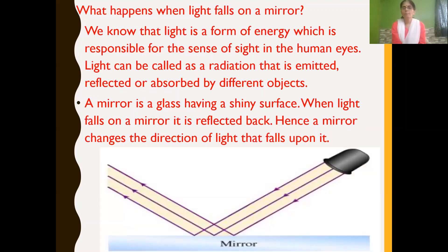When light falls on a mirror, it gets reflected back. We know that light is a form of energy because of which we can see objects, and light can be called as radiation — radiation of light that is emitted, reflected, or absorbed by different objects.